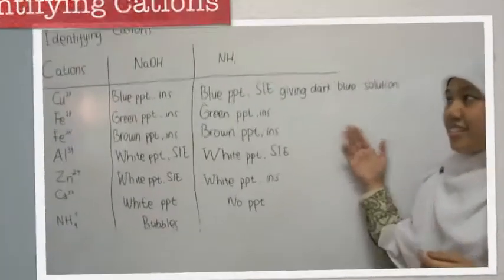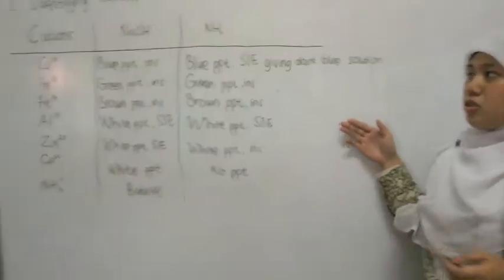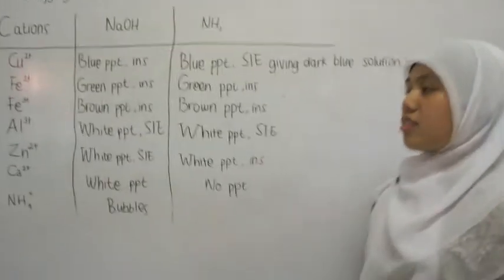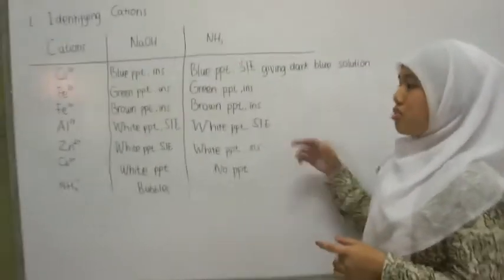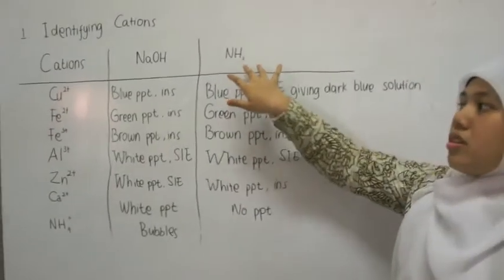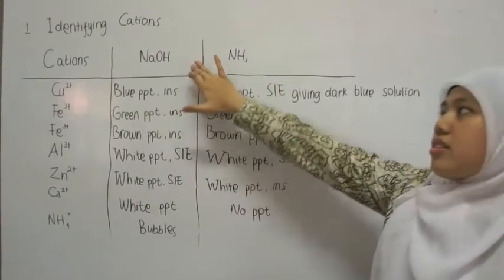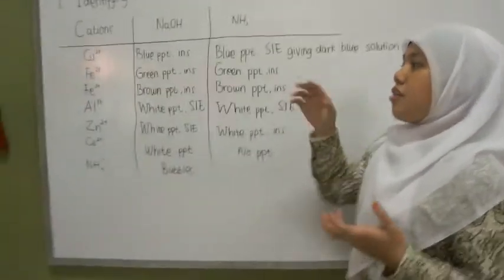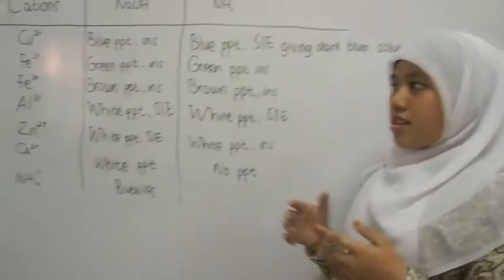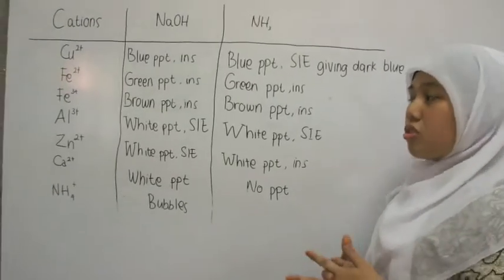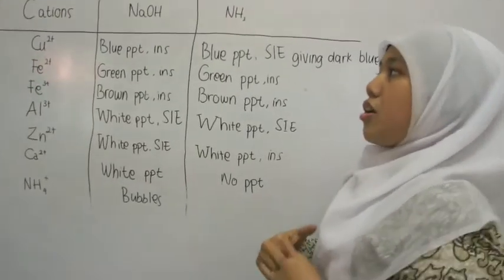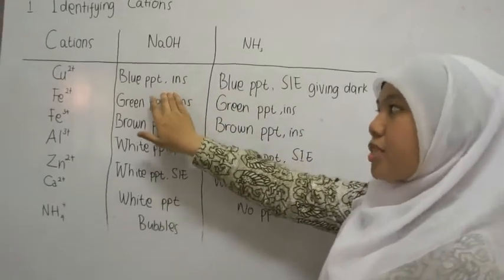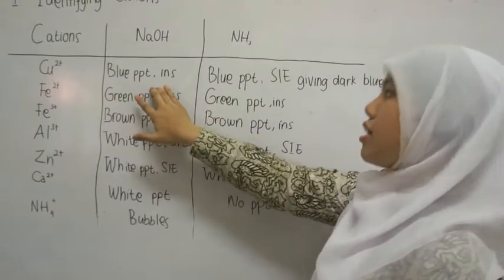Now, for the cations, I have made a table to identify the presence of all of these ions in the solution. To test all of them, you only need two reagents, which are sodium hydroxide and ammonia. For example, to test if there's any copper in your solution, when you test with sodium hydroxide, it will form a blue precipitation and it isn't soluble.